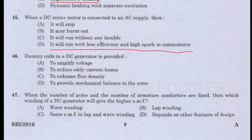Question 46. Dummy coils in a DC generator are provided: Option A - To amplify voltage. Option B - To reduce eddy current losses. Option C - To enhance flux density. Option D - To provide mechanical balance to the rotor. Answer is Option D: To provide mechanical balance to the rotor.